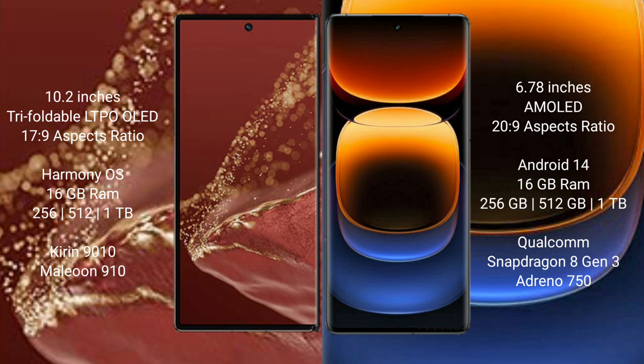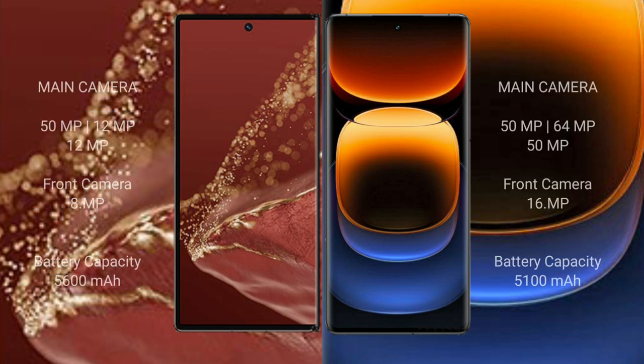Huawei Mate XT Ultimate features a triple rear camera setup: 50 MP plus 12 MP plus 12 MP, with a front camera of 8 MP. Vivo iQOO 12 Pro also has a triple rear camera setup: 50 MP plus 64 MP plus 50 MP, with a front camera of 16 MP.